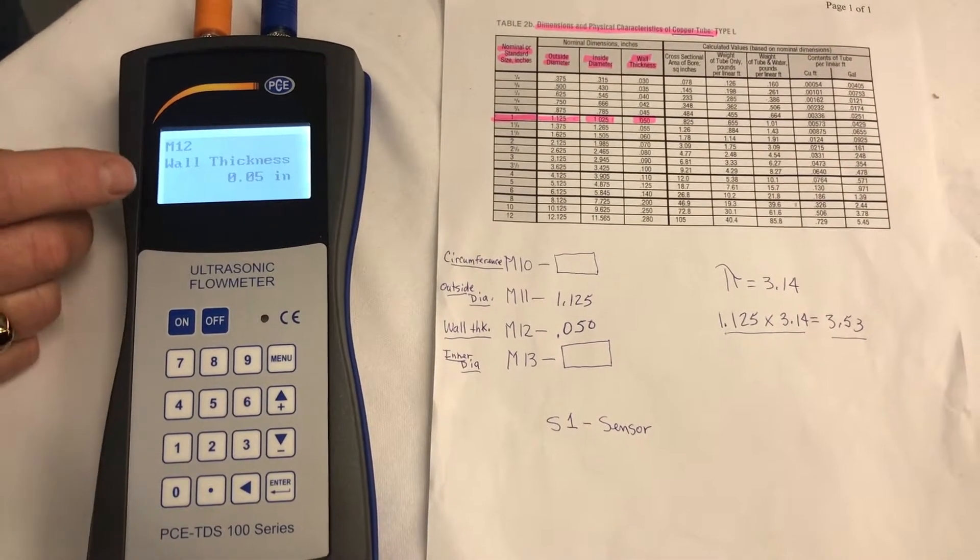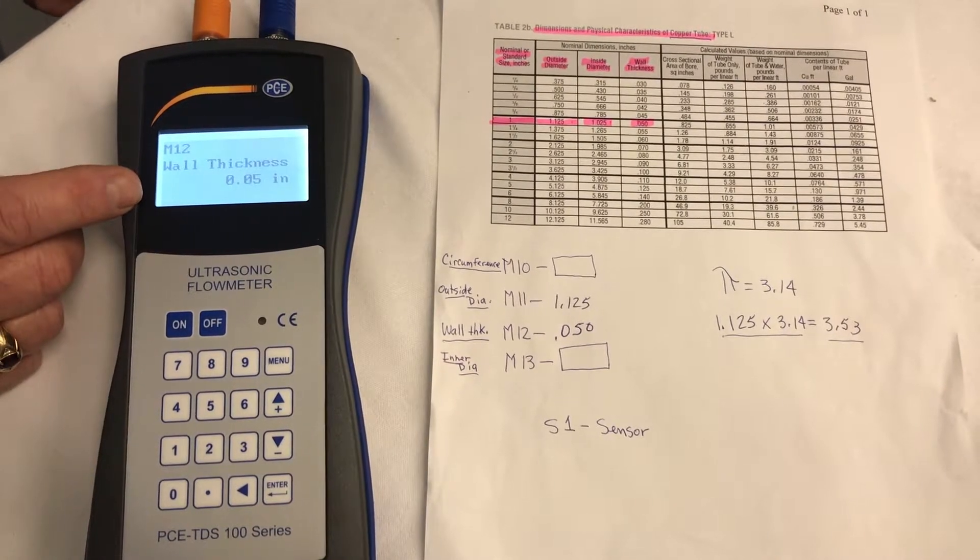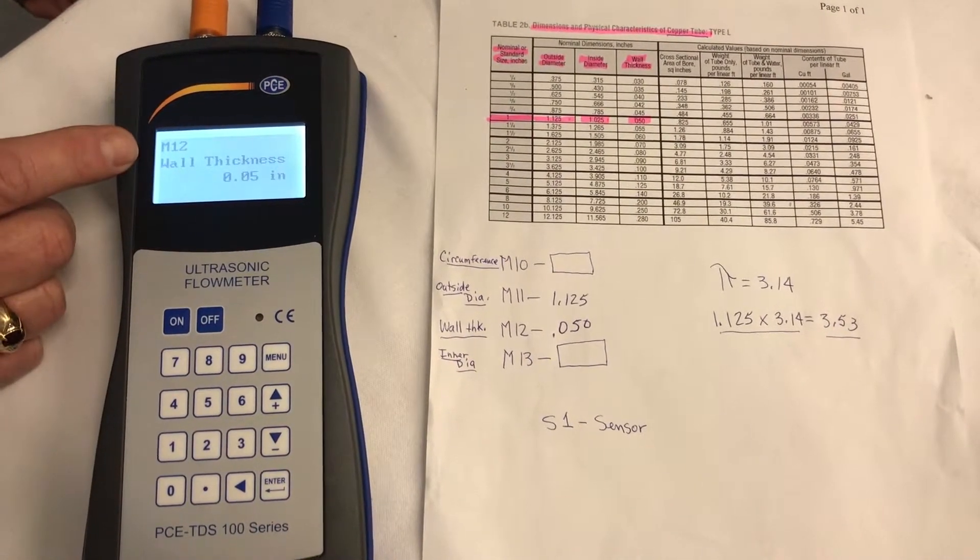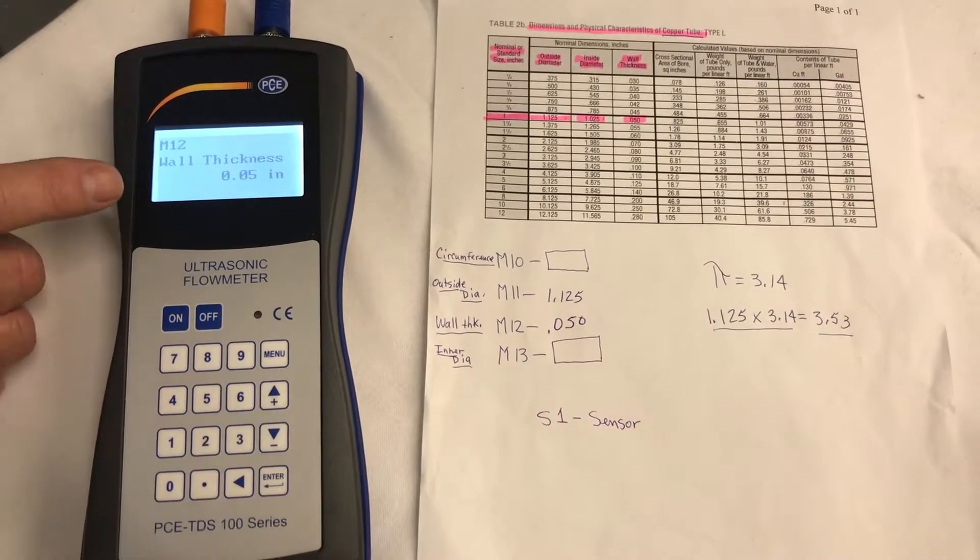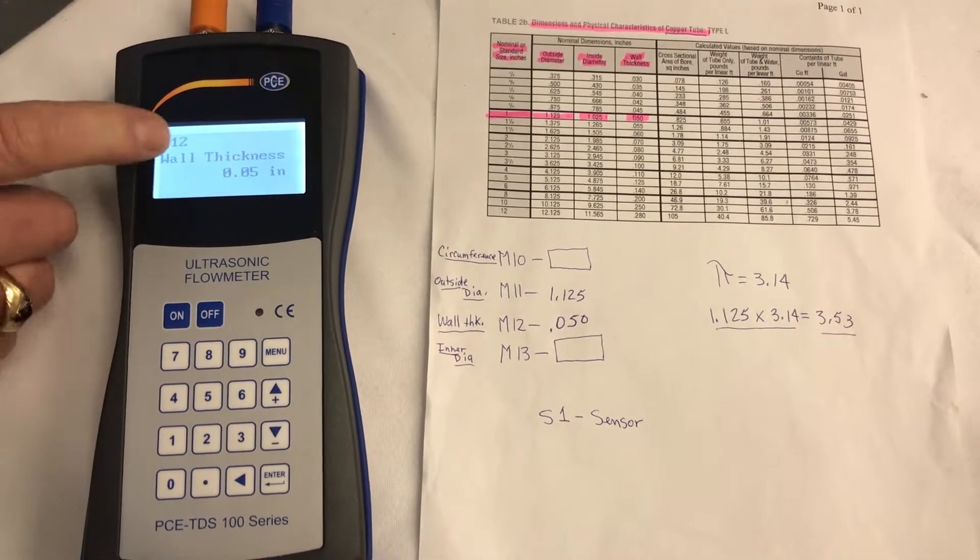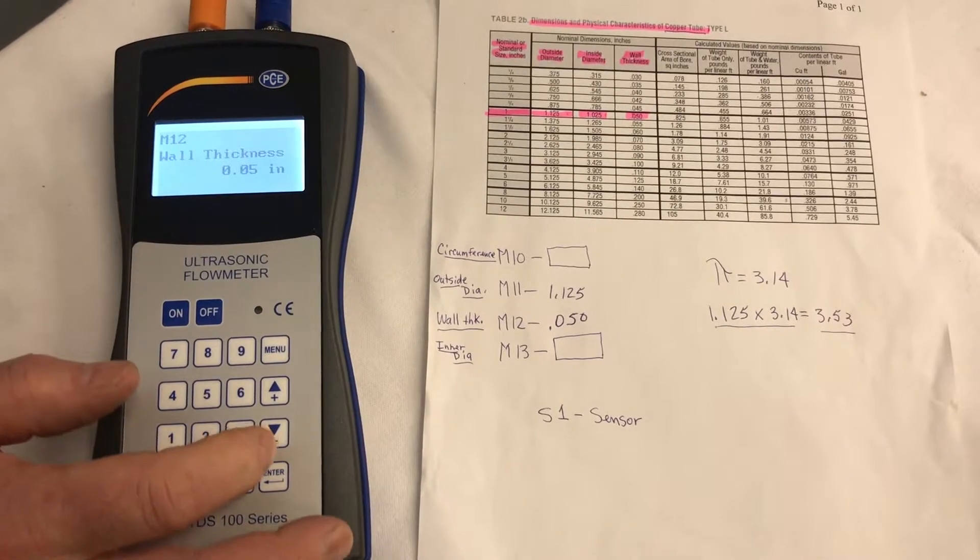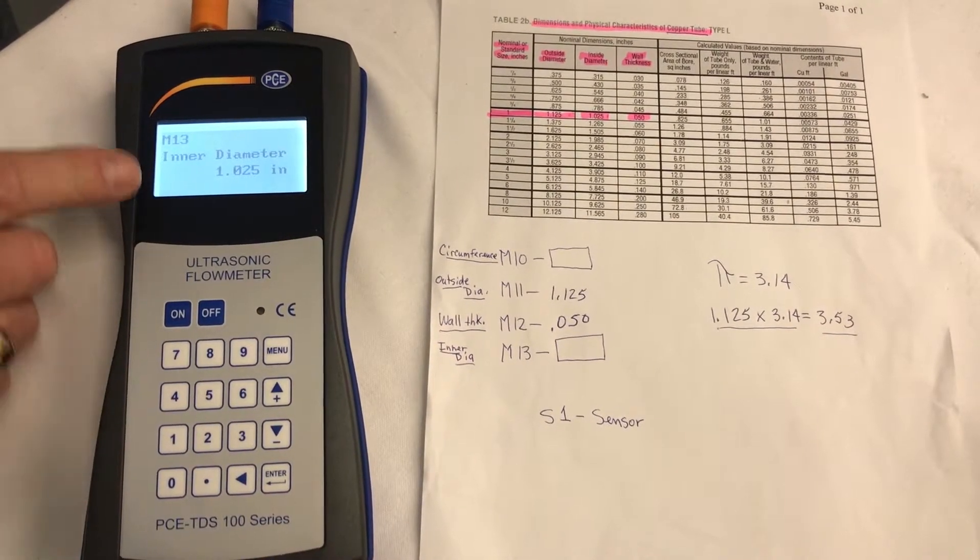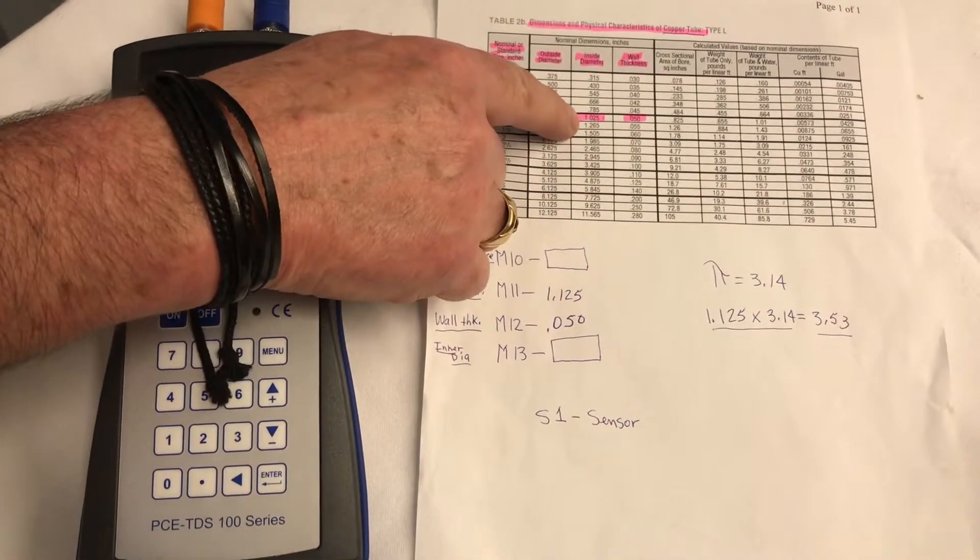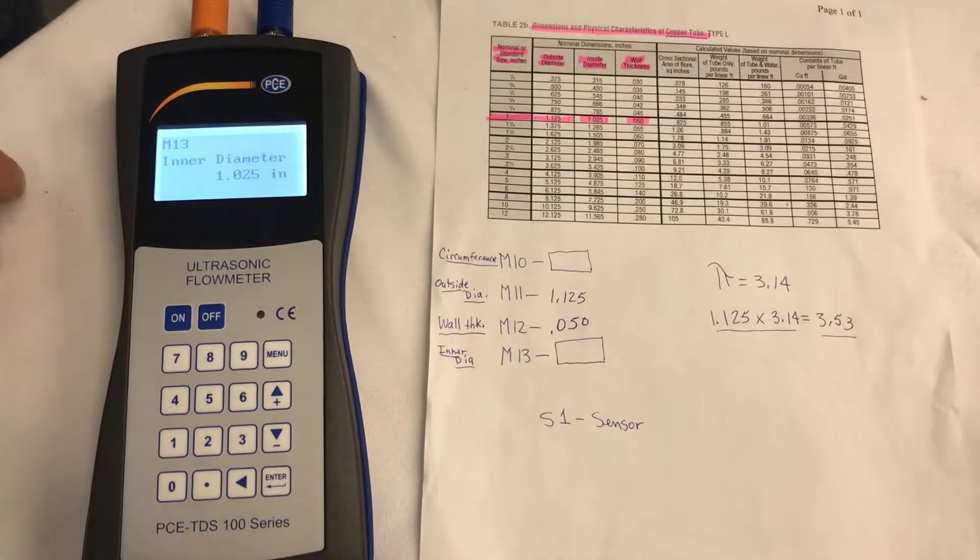Now, since we have 0.050 inside the meter, that will figure for us the M13, which is the inner diameter. So if we go down from M12 to M13, there it is, 1.025, and that's on our chart, 1.025, so it's done.